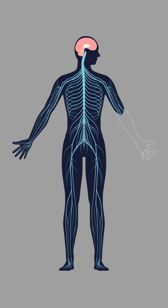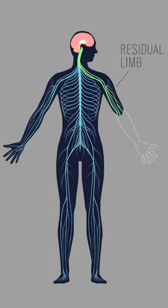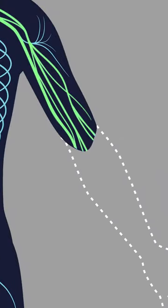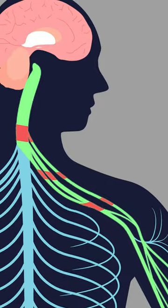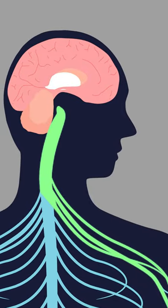The nerves that used to go to the hand are still there in the residual limb, and those nerves are still connected to the spinal cord, which is connected to the brain. There's activity in the brain and the nerves that used to represent the hand, and even though the hand is gone, that activity is still there and that leads to this phantom limb sensation.